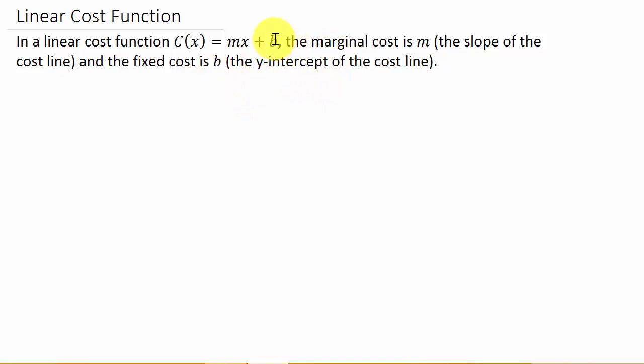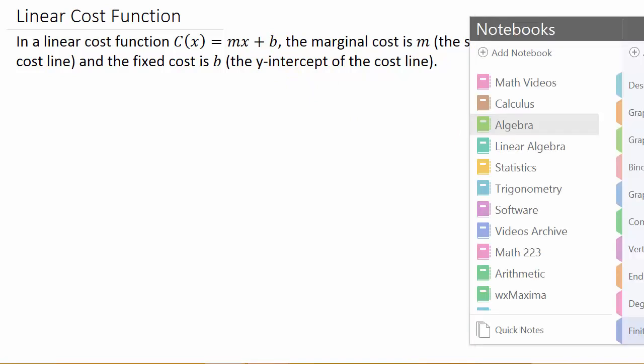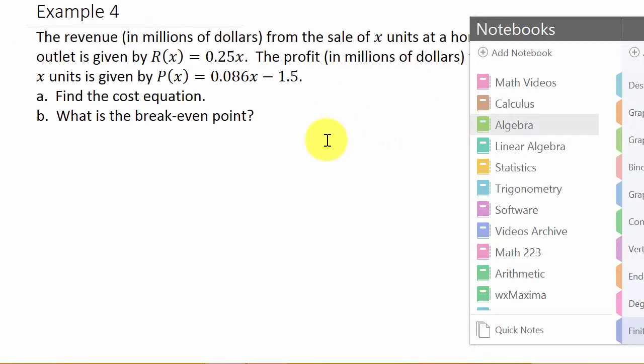And b, which is our fixed cost, is our y-intercept. This equation probably looks familiar. You're probably used to seeing it as y equals mx plus b, slope-intercept form of the line. Alright, so let's look and see what kind of example we have here.